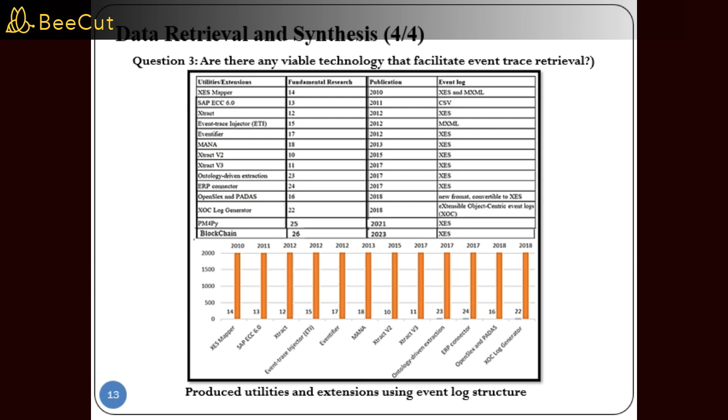This figure provides information about the technologies and the plugins created to mechanize event trace retrieval methodologies arranged in ascending order based on their year of development. The table also includes details about the event trace formats generated as a result of the event trace retrieval process. The third research query: are there any viable technologies that facilitate event trace retrieval, indicates the feasibility of these technologies.